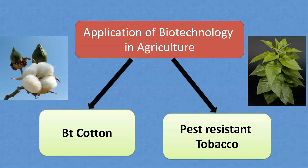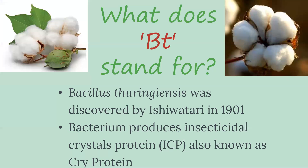We will study the application in agriculture to produce pest-resistant plants. There are two subtopics: one is to produce Bt cotton, and the other is production of pest-resistant tobacco. Let's discuss the first one — production of Bt cotton. BT stands for Bacillus thuringiensis, which is a bacterium. It produces insecticidal crystal protein, known as Cry protein.